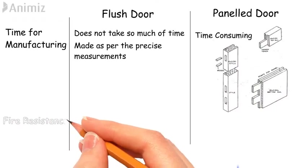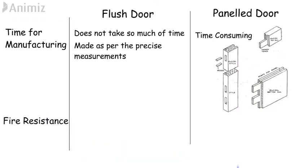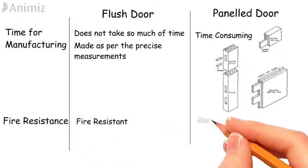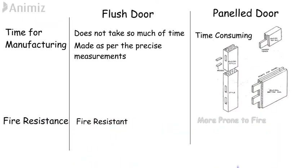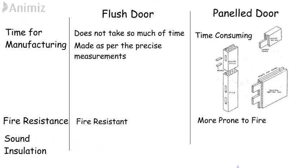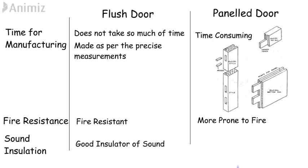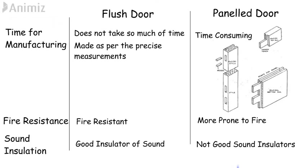Fire resistance: Flush door is fire resistant, whereas wooden panel doors are more prone to fire. Sound insulation: Sound insulation means the ability of a material to reduce sound transmission. Flush doors are good insulators of sound and provide privacy in homes as they have better soundproof material, whereas panel doors are not good sound insulators.